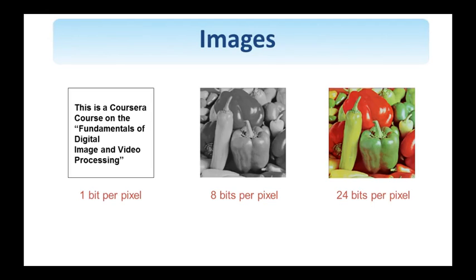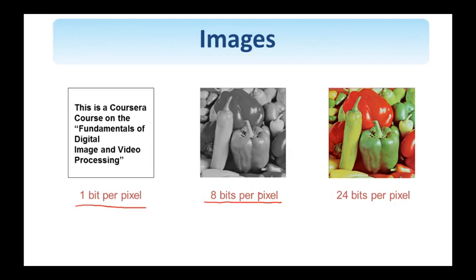Here are some examples of images. On the left you see a binary image — I only have two bits to represent the different colors, a black and a white value. Binary text images like this one are used in fax encoding when transmitting text from point A to point B. In the middle you see an 8-bit per pixel image, while on the right is a 24-bit per pixel image. This is a true color image — I have 2 to the 24 different color values, around 16 million different colors.